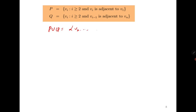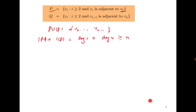Try to understand what P ∪ Q is. P ∪ Q consists of all those vertices v₂, v₃, ..., vₙ₋₁. At the same time, |P| + |Q| equals degree(v₁) = degree(v) plus degree(u). It is given that degree(u) + degree(v) is greater than or equal to n. So on one side |P| + |Q| ≥ n, but on the other side P ∪ Q has only n − 2 vertices. It means there must be some vertices common to P and Q for their combined cardinality to be ≥ n.